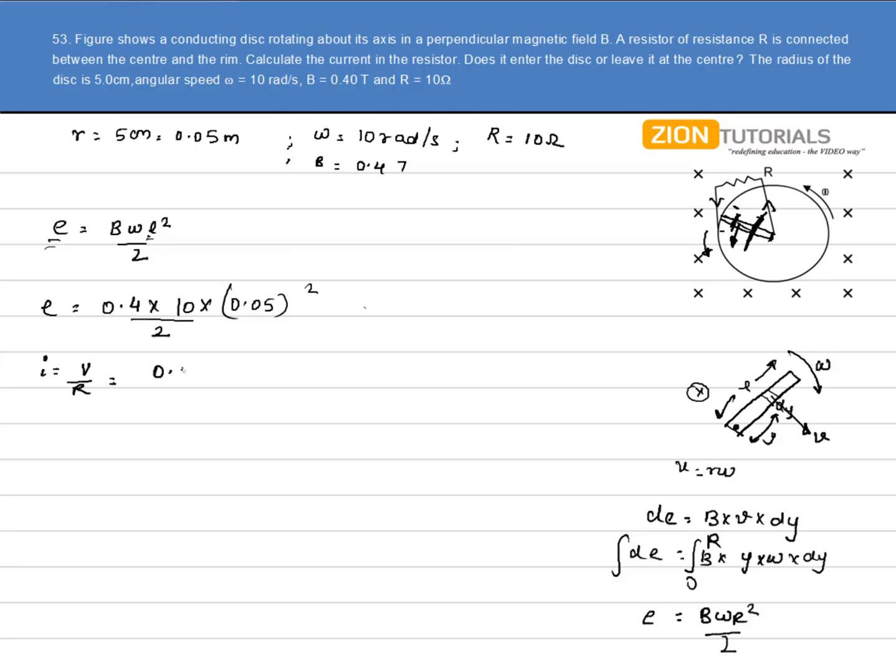Simply substituting the values, we have resistance as 10 ohms. In solving this, I get the value of current 0.5 mA. And that is the answer. If we talk about the direction, then I told you that it is flowing in this direction.